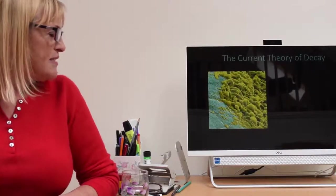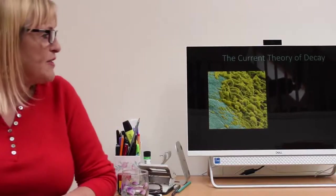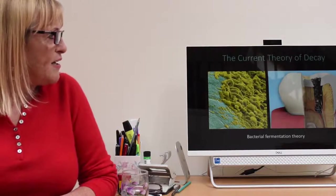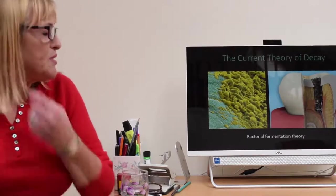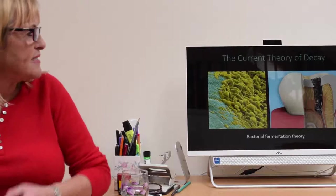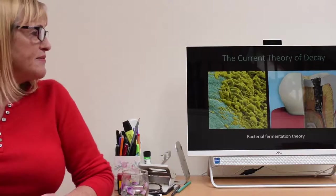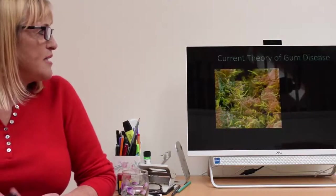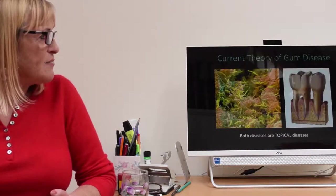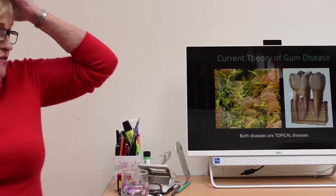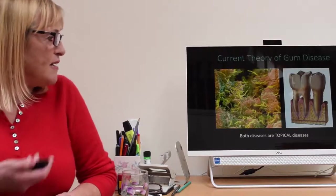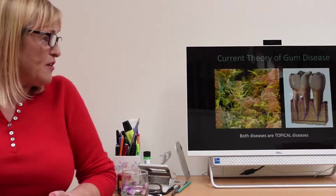This is the guy from the Pogues. That was a lot of damage done by 30 or something. The current accepted theory of decay is that you get bacterial films on the teeth, sugar and bacteria ferment the sugar, produce acids, and they eat into the tooth creating decay. That's the bacterial fermentation theory. The current theory of gum disease, similarly, you get mature plaque. The plaque attacks the supporting tissues of the tooth, causes inflammation and destruction. In the current theory, both are topical diseases.